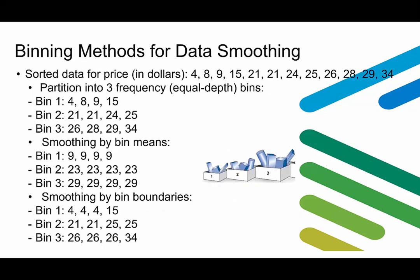Let's look at binning methods for data smoothing in detail. Suppose we have 12 sorted data points for price ranging from 4 to 34, partitioned into three frequency bins. If we do smoothing by bin means, bin 1 gets all elements as 9, bin 2 as 23, and bin 3 as 29. Alternatively, smoothing by bin boundaries gives bin 1 values of 4, 4, 4 and 15, bin 2 values of 21 and 25, and bin 3 values of 26 and 34. This minimizes the effects of small observation errors and reduces chances of overfitting.